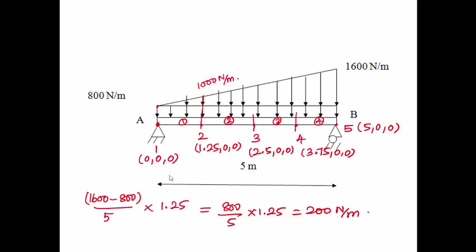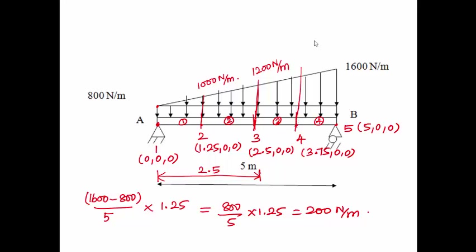Similarly, for the second element from node 2 to node 3 over 2.5 meter distance, the load variation is again 200 N/m, so at the third nodal point the load is 1000 plus 200 = 1200 N/m. At the fourth nodal position, adding another 200 N/m gives 1400 N/m. Then at the rightmost extreme, 1400 plus 200 = 1600 N/m.